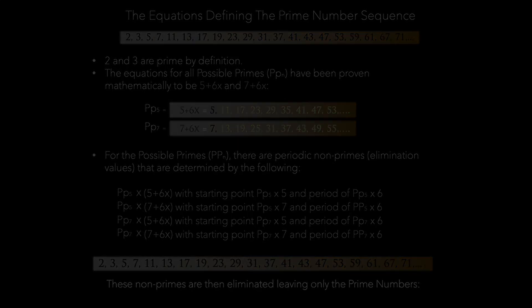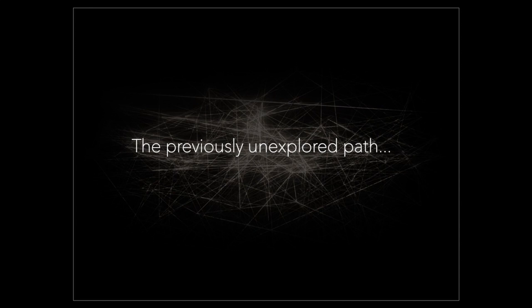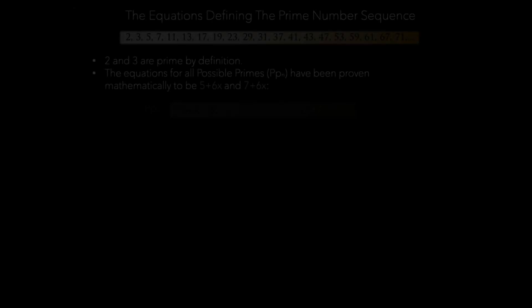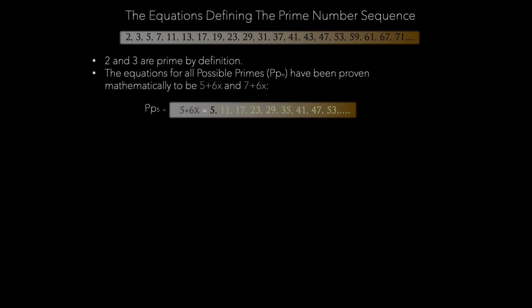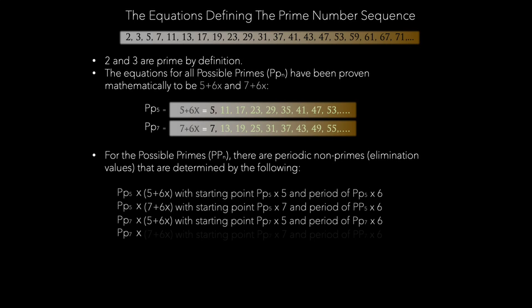This brings us to an unexplored insight. Now, two and three are primed by definition, as we know. And the equations for all possible primes have been shown mathematically to be 5 plus 6x and 7 plus 6x. And for all possible primes, there are periodic non-primes elimination values that are determined by the following equations. And when these equations are used, these non-primes are then eliminated, leaving only the prime numbers.